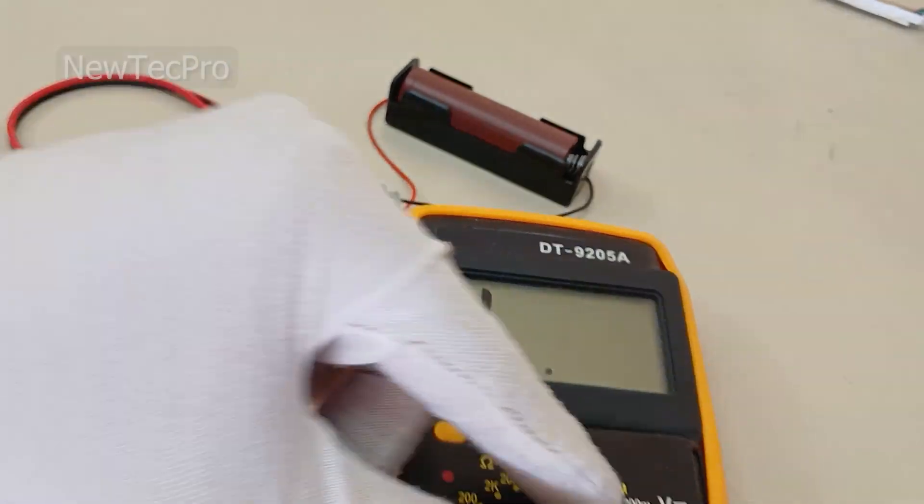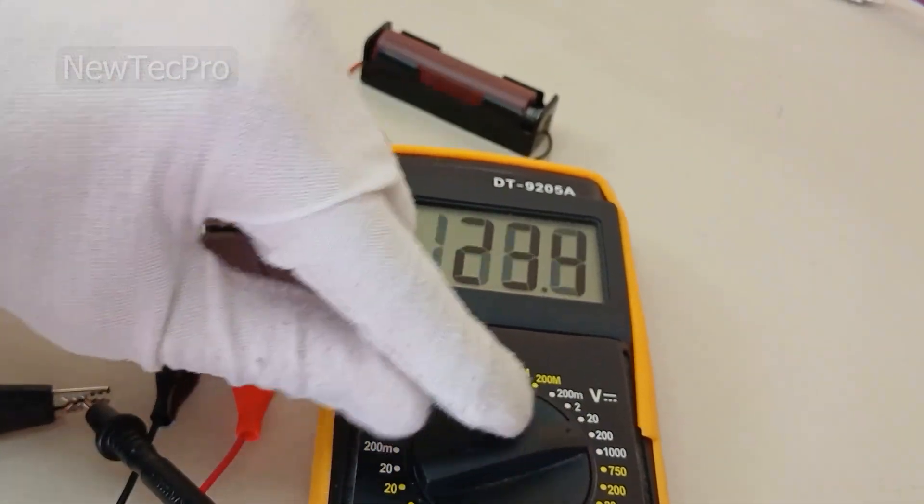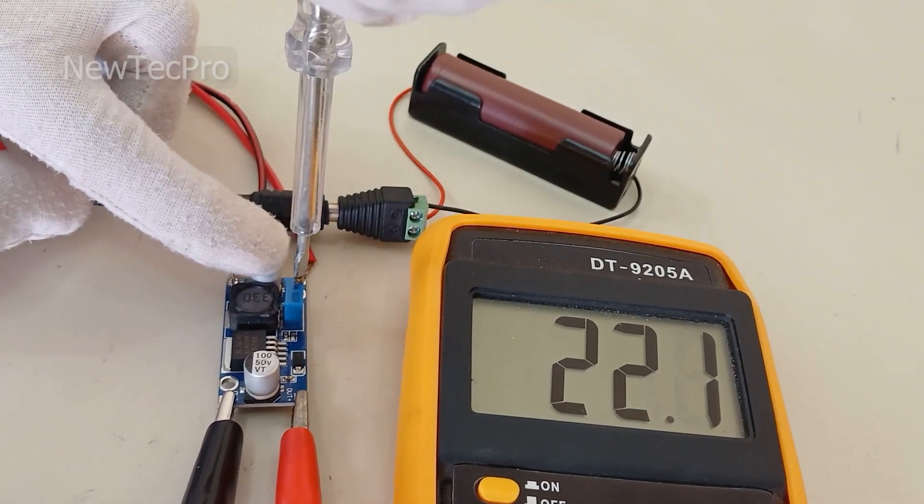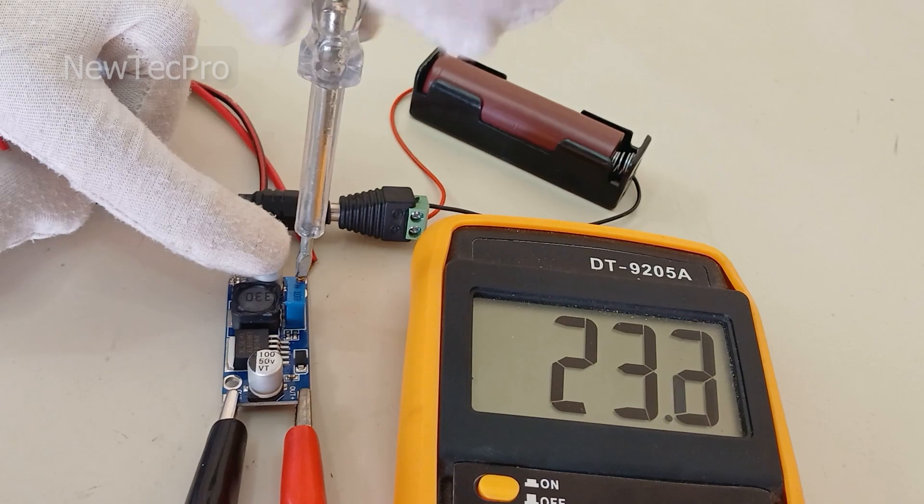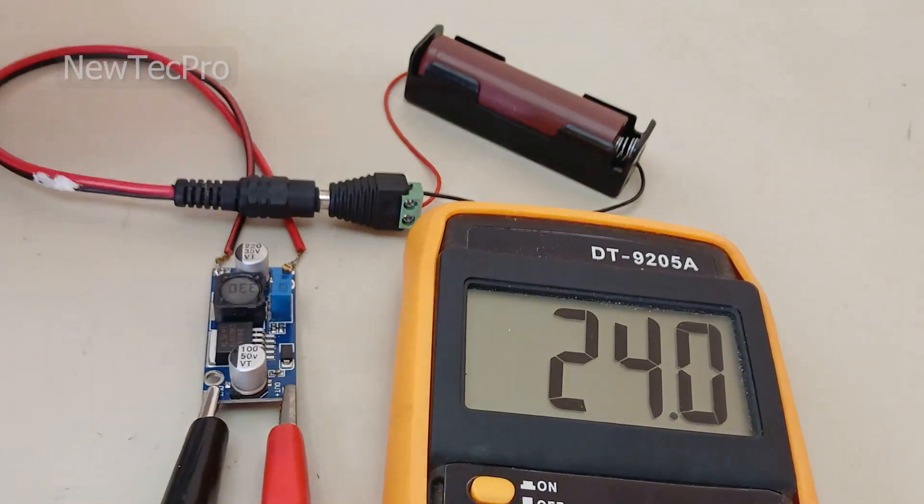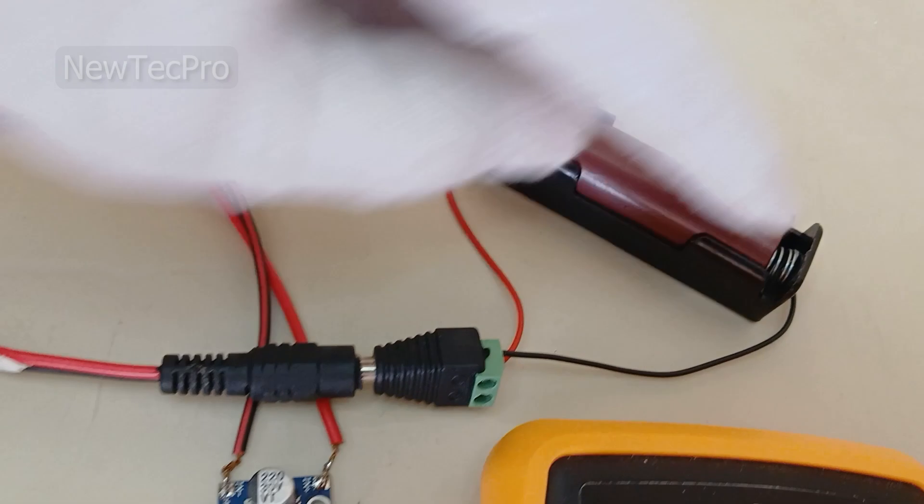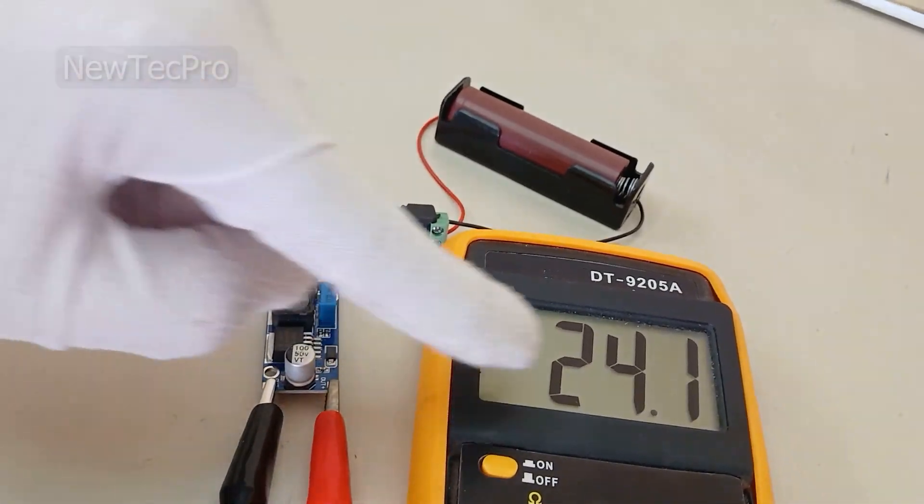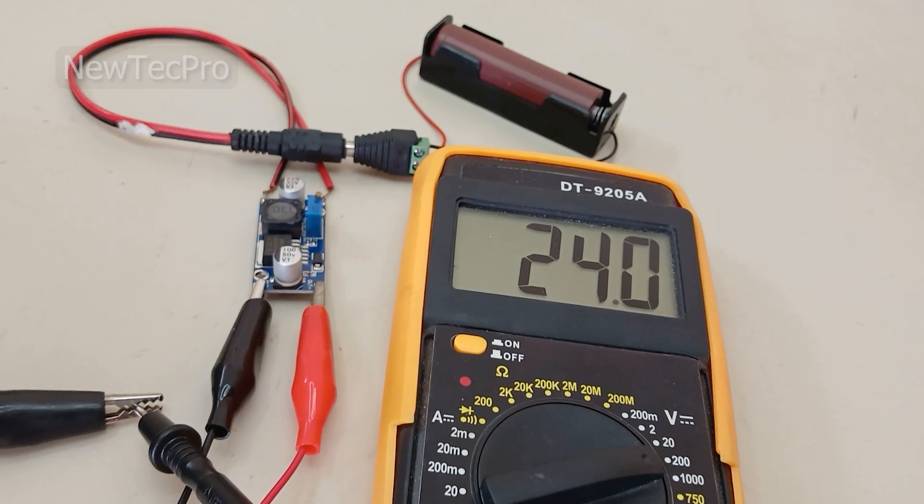Now adjusting the settings and continuing to step up to 24 volts. You can see the input voltage is 3 volts and the output voltage is 24 volts.